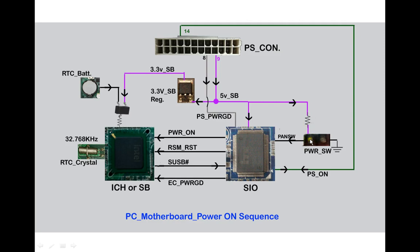Pin 6 is connected to one of the pins of the SiO chip, and that pin is called PANSW (panel switch). This 5V standby voltage also goes to the third pin of the 3.3V regulator. From the second pin of this regulator we get 3.3V standby output — it converts the 5VSB into 3.3VSB. This 3.3V standby is also present before and after pressing the power button, and it goes to the south bridge.